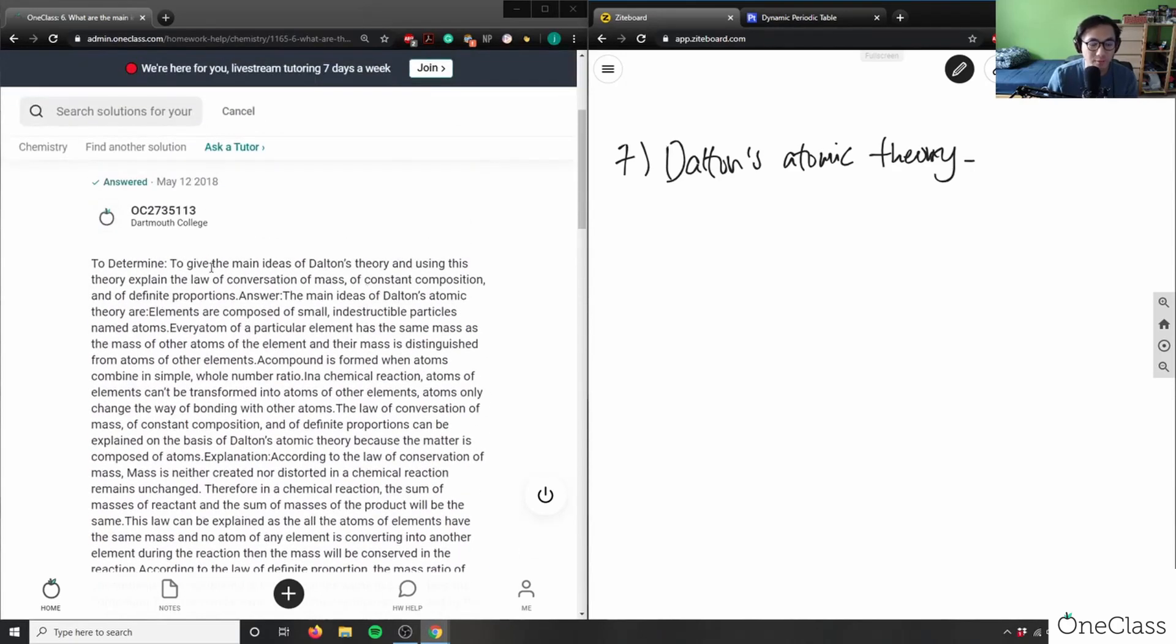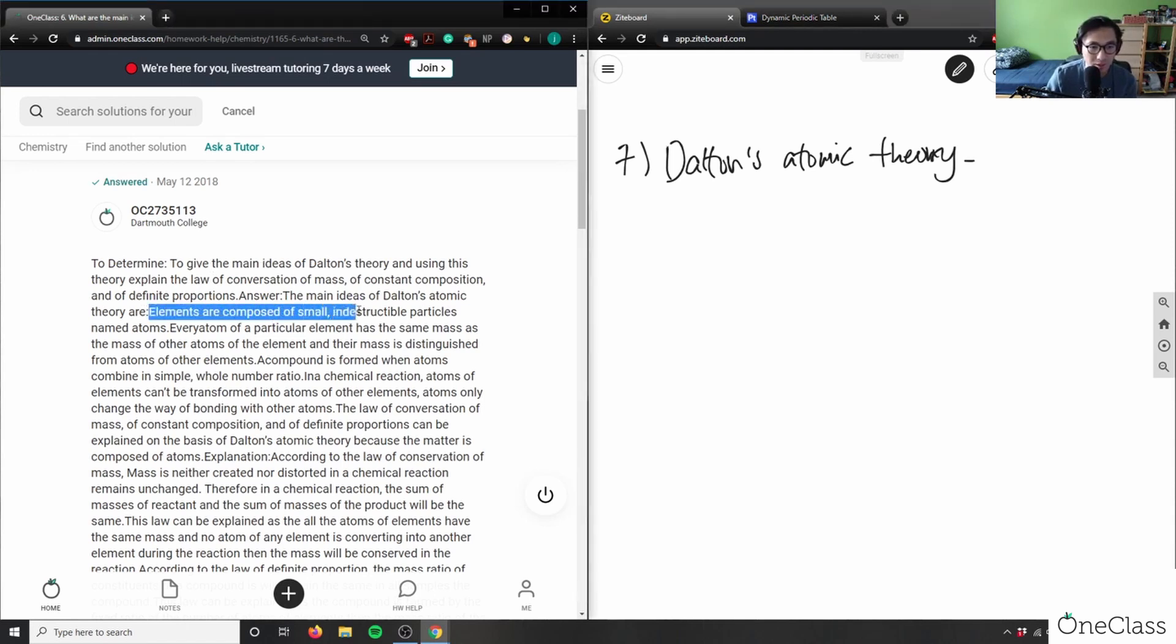It's a very big paragraph, so I'm going to try to skim it for you. Main ideas of Dalton's atomic theory are: elements are composed of small indestructible particles named atoms, that's good. Every atom of a particular element has the same mass as other atoms of the element.